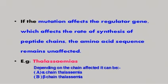If the mutation affects the regulator gene, which affects the rate of synthesis of peptide chains, there is no change in the amino acid sequence — that remains unaffected. The main group of hemoglobinopathy which undergoes such a mutation is known as the thalassemias.